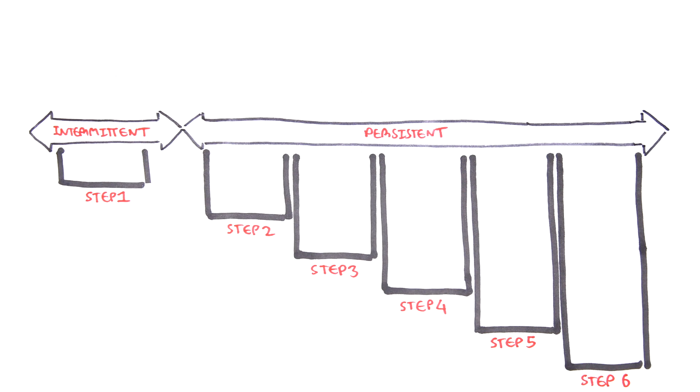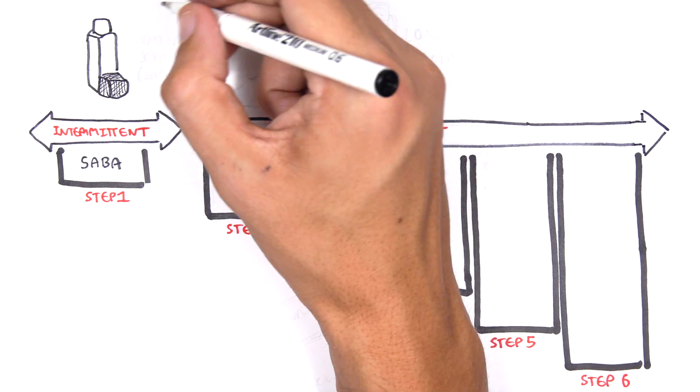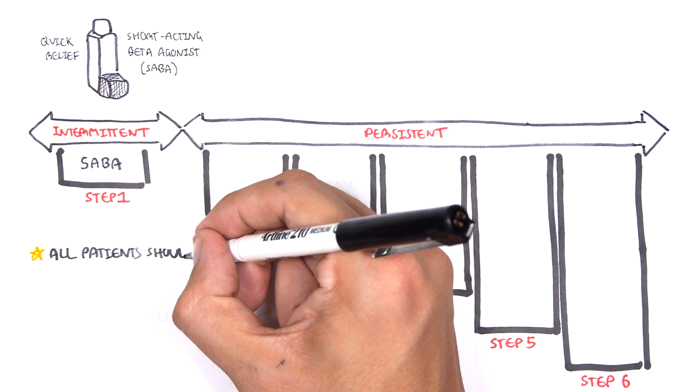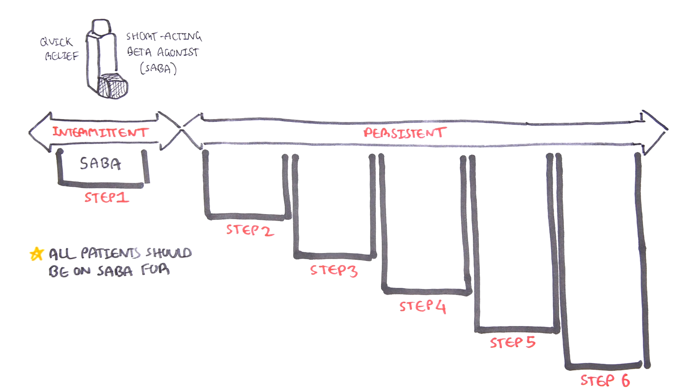For intermittent asthma, short-acting beta agonists are used, and this is for quick relief. In general, all patients with asthma should be on a short-acting beta agonist for quick relief.